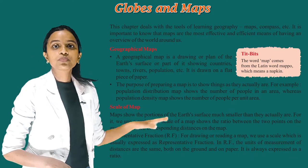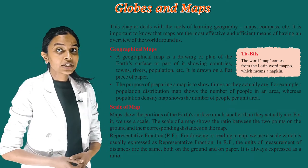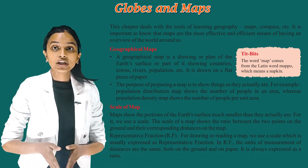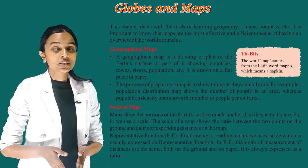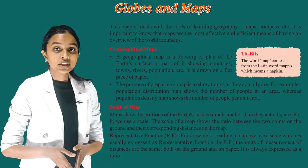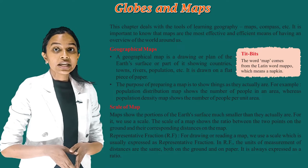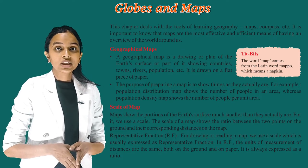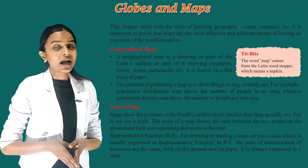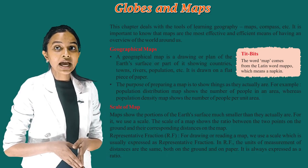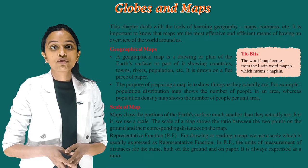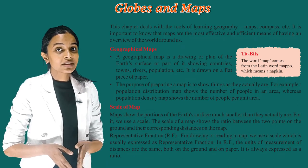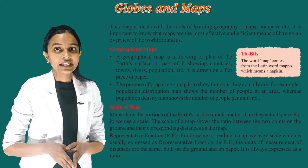A geographical map is a drawing or plan of the earth's surface or part of it, showing countries, towns, rivers, population, etc. It is drawn on a flat piece of paper. The purpose of preparing a map is to show things as they actually are. For example, a population distribution map shows the number of people in an area.